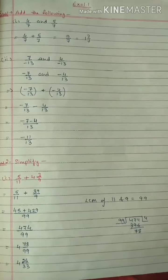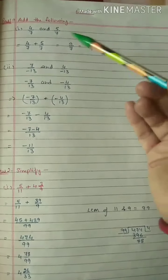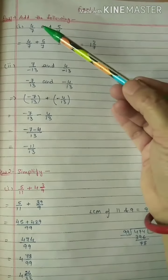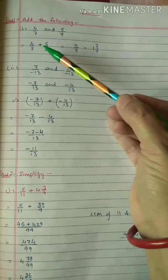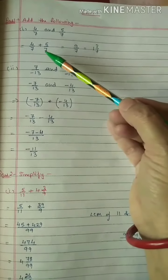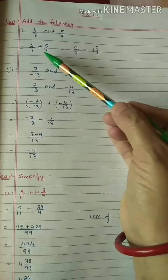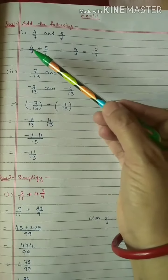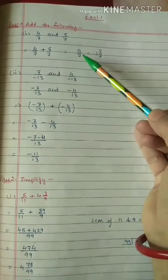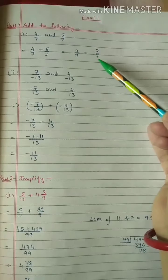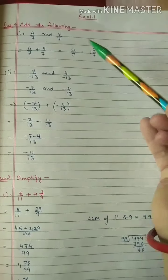We will start Exercise 1.1, Question 1: add the following. First part: 4 by 7 and 5 by 7. So 4 by 7 plus 5 by 7 — the denominator is the same, so directly add the numerators: 4 plus 5 is 9, giving 9 by 7. Converting to mixed fraction: 1 whole number 2 by 7.